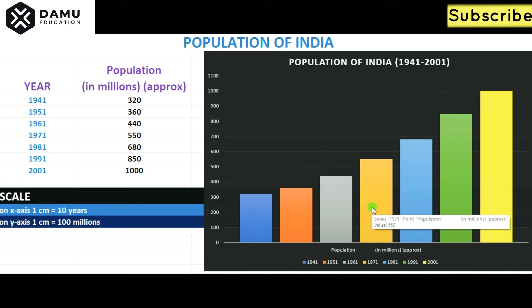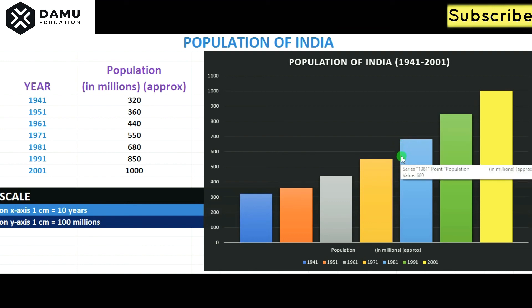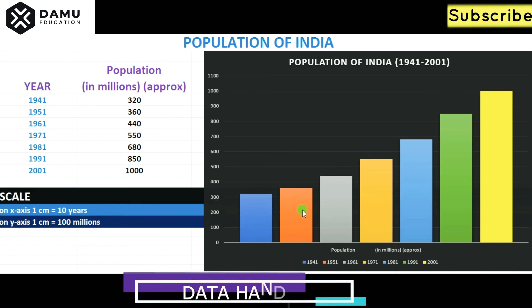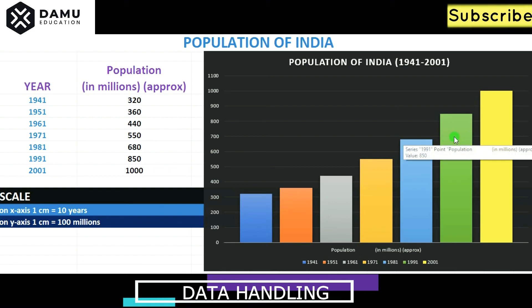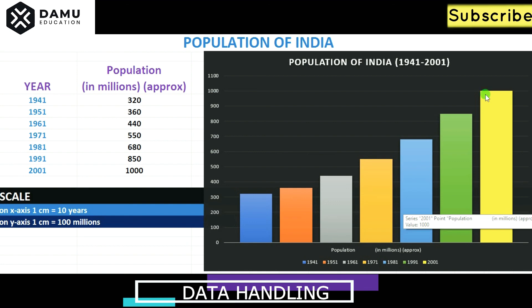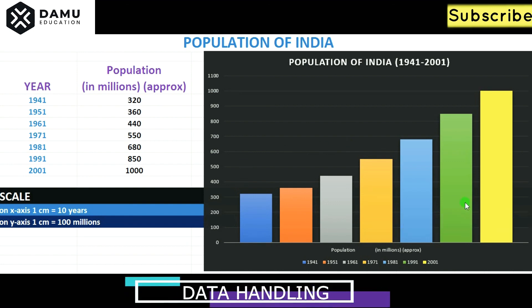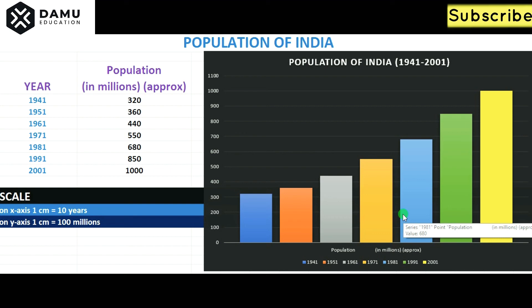For 1971 it is 550 — the middle point between 500 and 600. For 1981 it is 680 — after 600, take 8 units, since all divisions are divided into 10 divisions of 10 millions each. For 1991 it is 850, and for 2001 it is 1000. Like this, we construct the complete bar graph on the graph sheet.